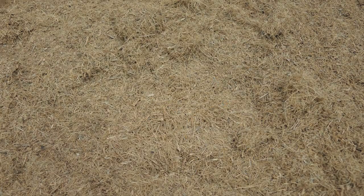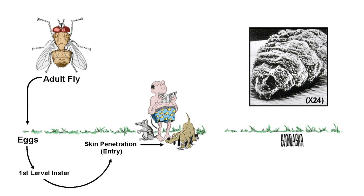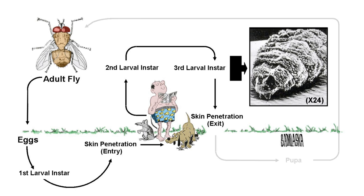The natural hosts are rats and domestic dogs, but humans will also do. In review: the adult fly lays its eggs in sandy soil, the eggs mature, the first larval instar penetrates the host, develops into second and third larval instar, exits the skin, pupates in the soil, and becomes an adult fly.